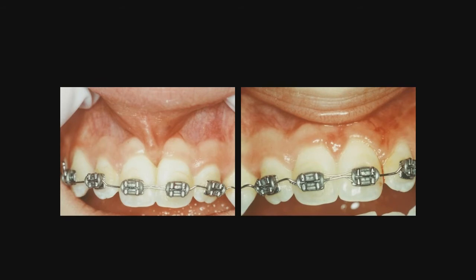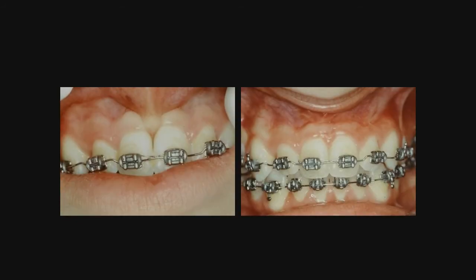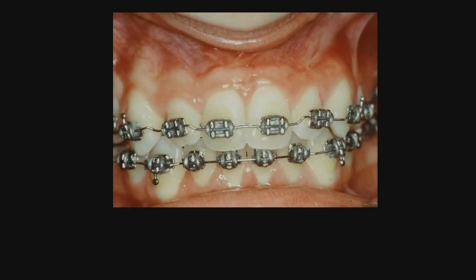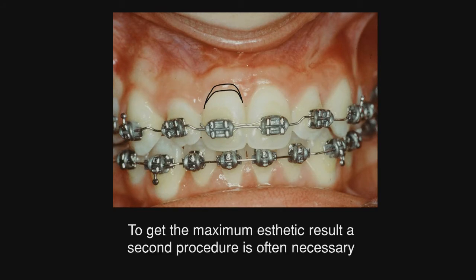So this is the result that we got on initial healing, and you can see that we have no black triangle, and the papilla appears to be gingival tissue rather than frenal tissue. But so often in these procedures there is a gingival asymmetry, and you may need to go in and do a very slight gingivoplasty to even this up so it gives a much more aesthetic result.